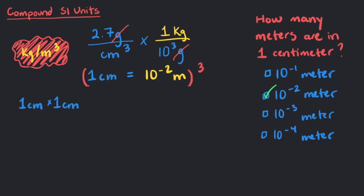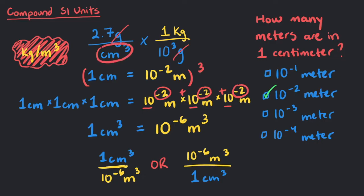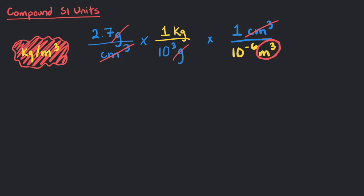And next, we multiply 10 to the negative 2 meters times 10 to the negative 2 meters times 10 to the negative 2 meters. The exponents with the same base are all added together in multiplication, giving us an answer of 10 to the negative 6. This creates a new conversion factor of 1 cubic centimeter over 10 to the negative 6 cubic meters. Going back to the expression we were making earlier, we want cubic centimeters to cancel out. So we should keep the conversion factor as 1 cubic centimeter over 10 to the negative 6 cubic meters. This way, we will be left with cubic meters on the bottom.